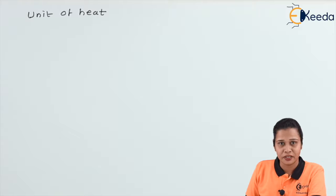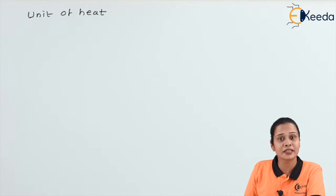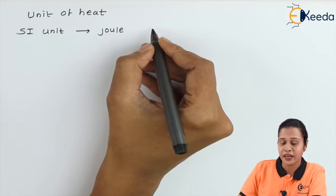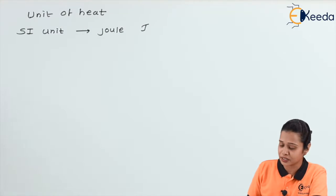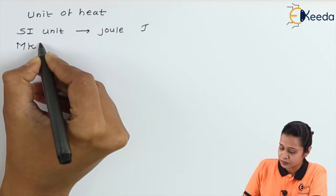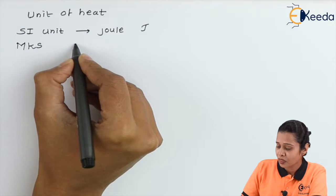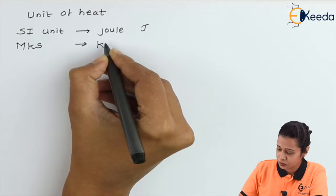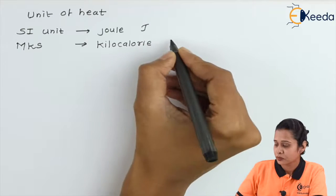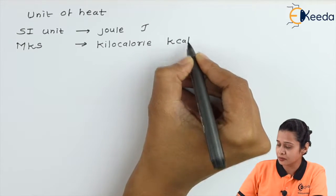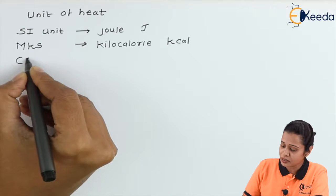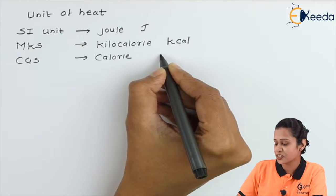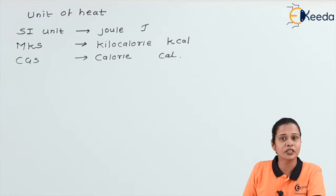We will see the units of heat. Since heat is a form of energy, its SI unit is joules, with symbol J (capital J). In the MKS system, the unit is kilocalories, abbreviated as K-Cal. In the CGS system, the unit is calories, abbreviated as Cal. These are the units of heat.